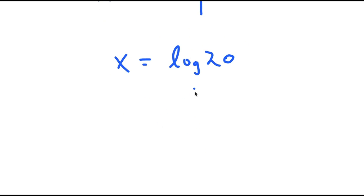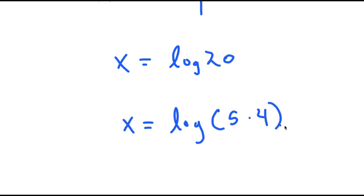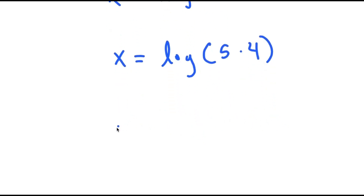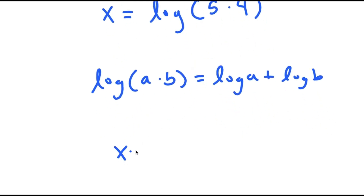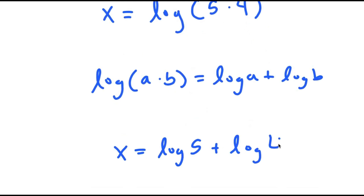Now let's find the exact value of this. Log 20 is equal to log of 5 times 4. And if I have something in the form log of a times b, this is equal to log a plus log b. So x is going to equal log 5 plus log 4.